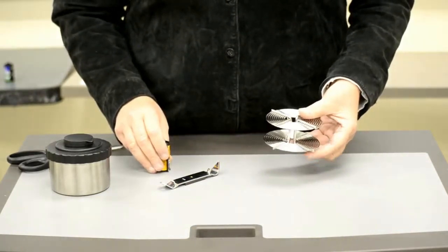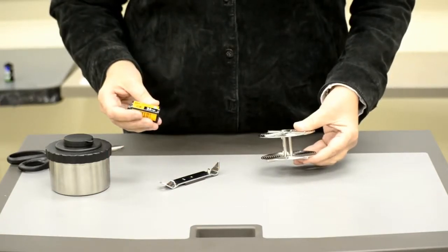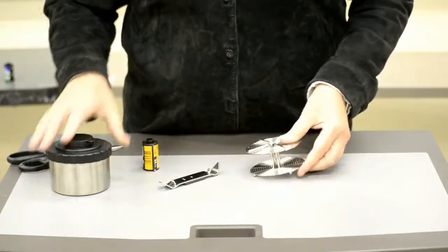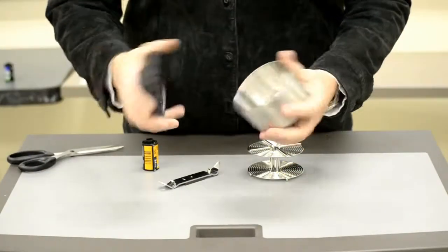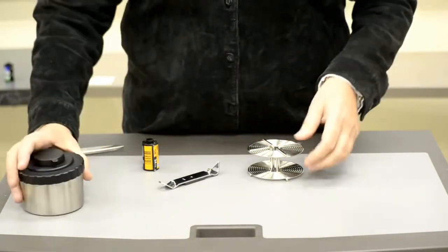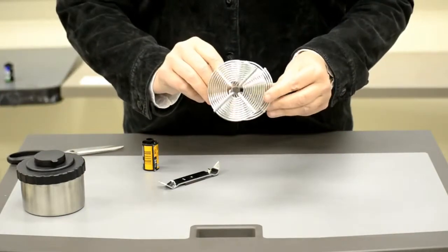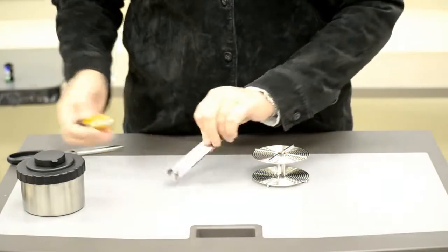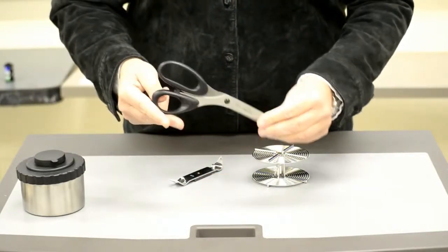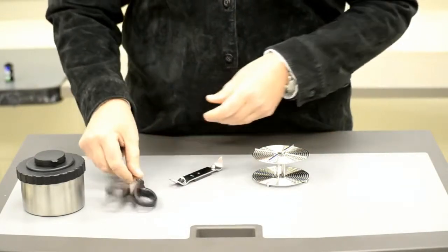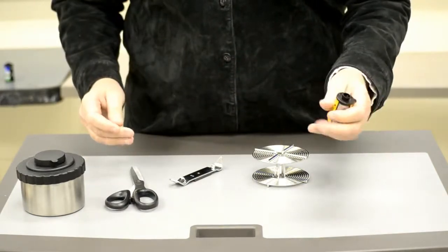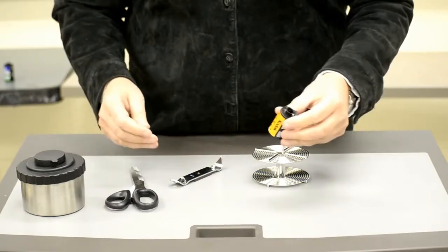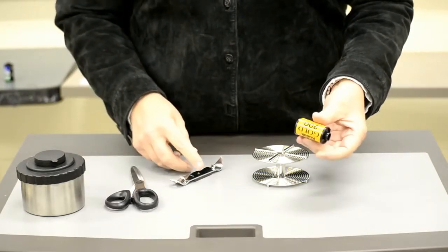The items you're going to need before you take film out of its cassette and put it onto a reel will be the light-tight tank with its lid, the reel itself, a bottle opener, scissors, and your roll of film. Today I'm actually going to be practicing with a roll of film that is not any good.